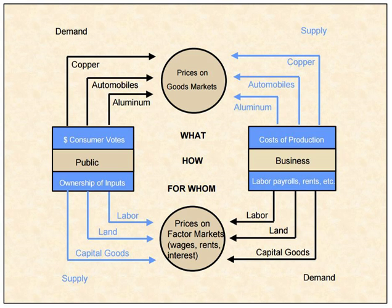The price of an item is also called the price point, especially where it refers to stores that set a limited number of price points. For example, Dollar General is a general store or five and dime store that sets price points only at even amounts, such as exactly $1, $2, $3, $5, or $10 among others.